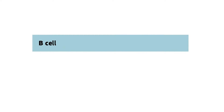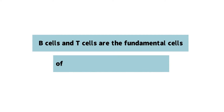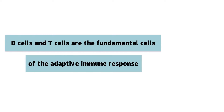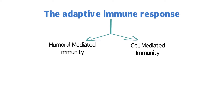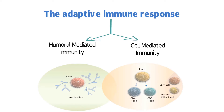Number two: B cells and T cells are the fundamental cells of the adaptive immune response. The adaptive immune response consists of humoral-mediated immunity and cell-mediated immunity. Humoral-mediated immunity is the name for immunity that is provided by B cells. Cell-mediated immunity is the name for the immunity provided by T cells.